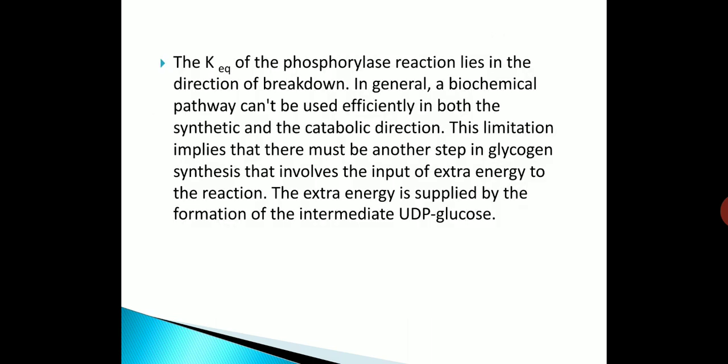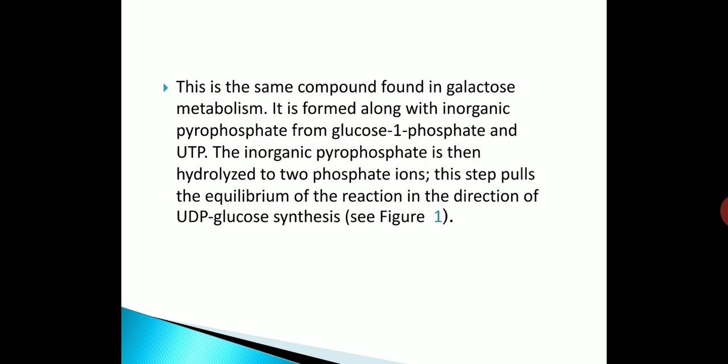The key equilibrium of the phosphorylase reaction lies in the direction of breakdown. In general, a biochemical pathway cannot be used efficiently in both the synthetic and the catabolic direction. This limitation implies that there must be another step in glycogen synthesis that involves the input of extra energy to the reaction.